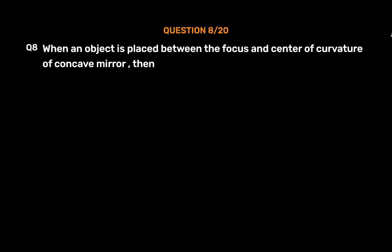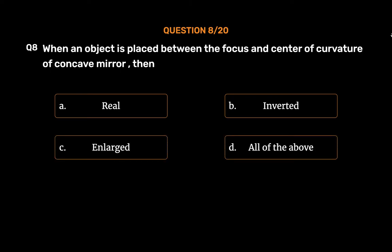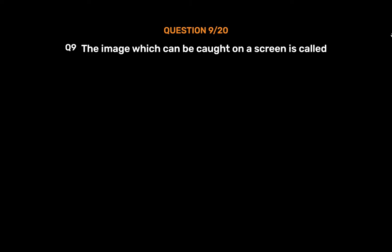Question No. 8: When an object is placed between the focus and center of curvature of a concave mirror — Option A: Real, Option B: Inverted, Option C: Enlarged, Option D: All of the above. The correct answer is Option D: All of the above.